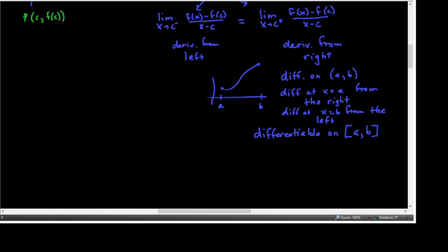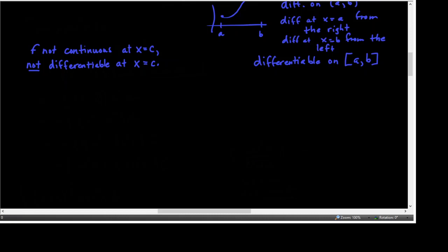Now, if a function is not continuous at x equals c, it is not differentiable at x equals c. You must have continuity as a precondition for differentiability. Continuity is an important concept — if you don't have continuity, a lot of things fall apart. So if you have a discontinuity, it's definitely not differentiable at that discontinuity at x equals c.